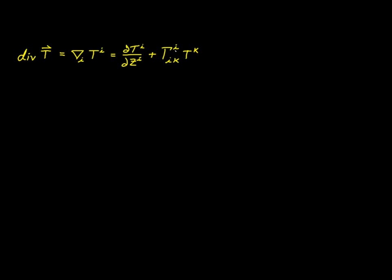Now what I want to do is rename the indexes in the second term. Both i and k are dummy indexes, so I can rename them. We'll have the partial derivative of t^i with respect to z^i, and this time I'm going to rename i to m. So we'd have gamma with an m here and here, and then I'm going to rename k to i. These two expressions are exactly equal — all I've done is rename the dummy indexes.